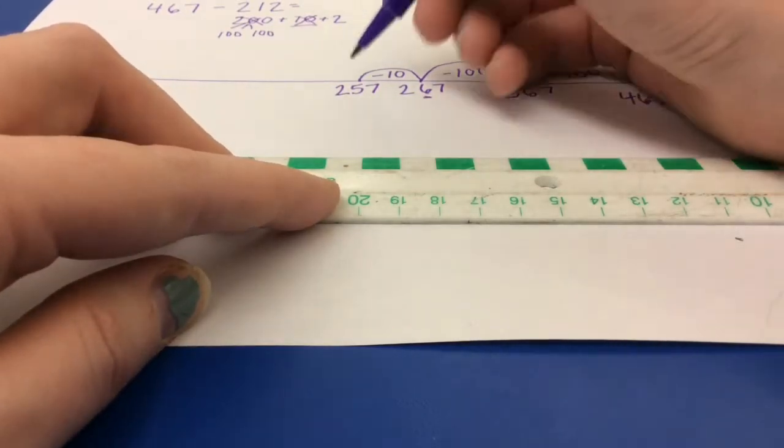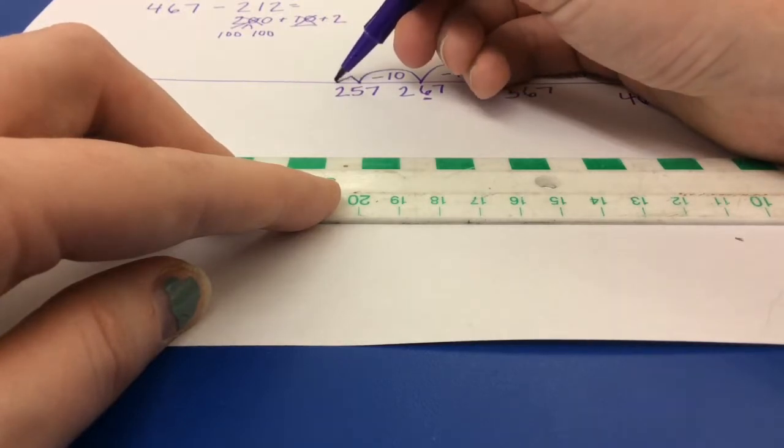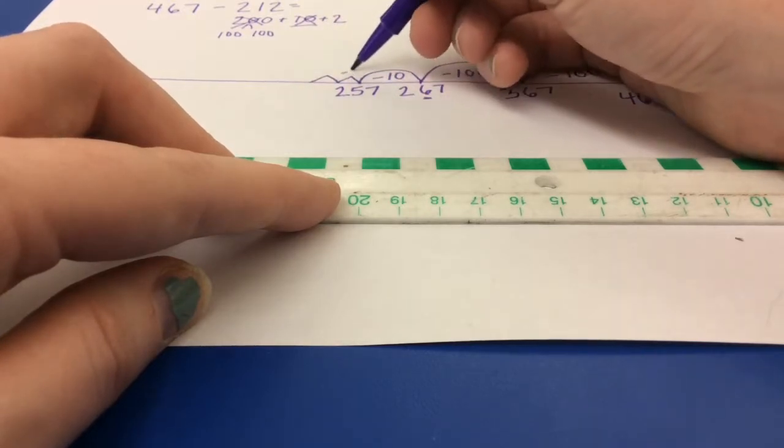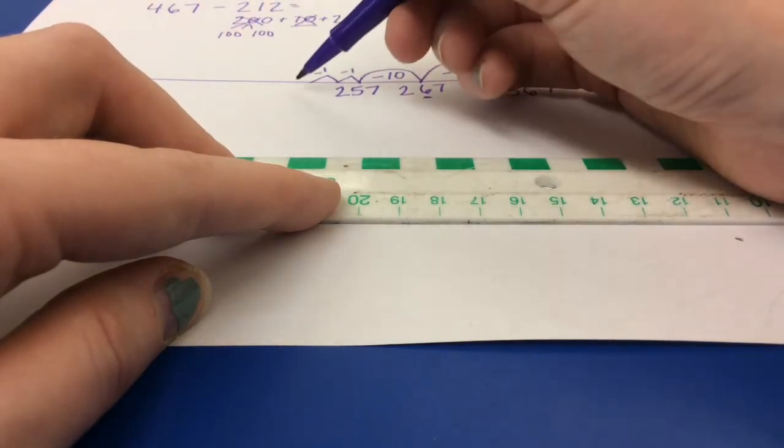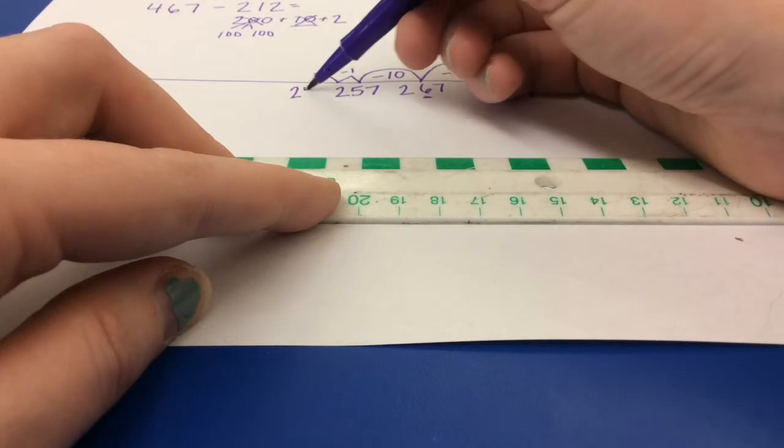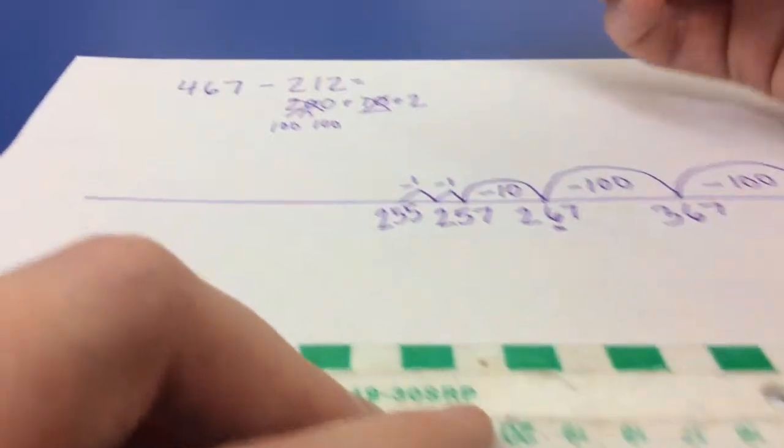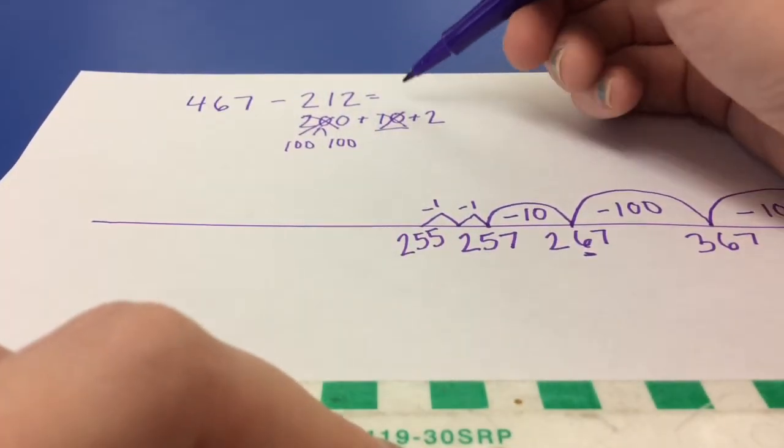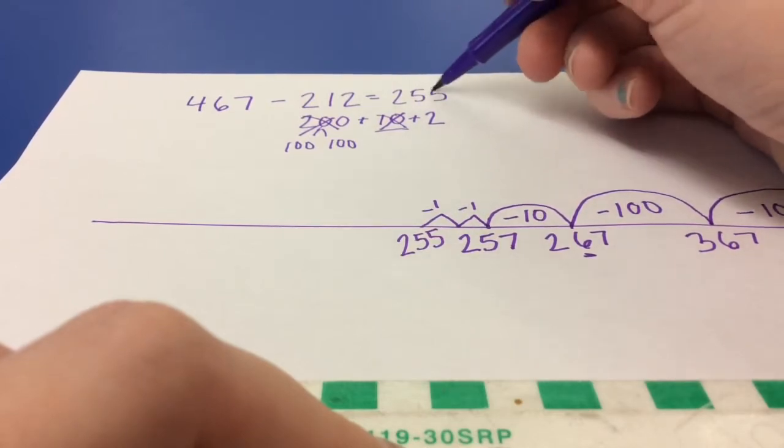And now I need to take away 2. 1, 2. So my answer becomes 255. So the answer to 467 minus 212 equals 255.